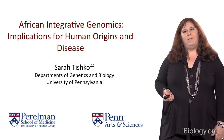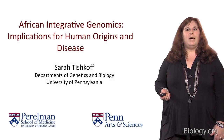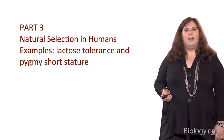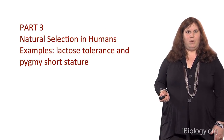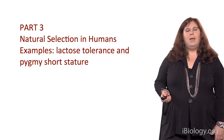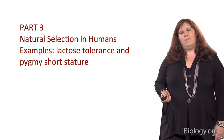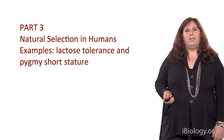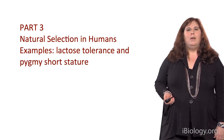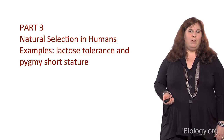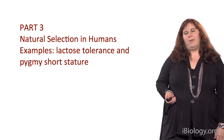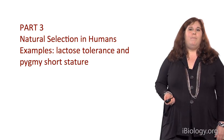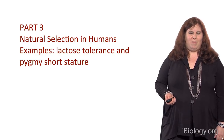For the last part of my lecture series, I want to talk about examples of natural selection in humans. The two particular examples I'm going to be talking about are the evolution of lactose tolerance in East Africa and of pygmy short stature.